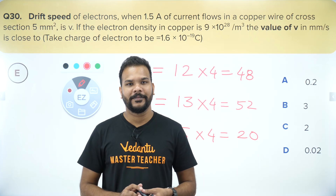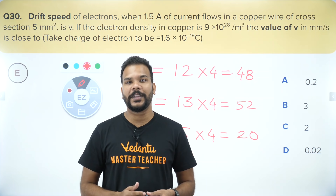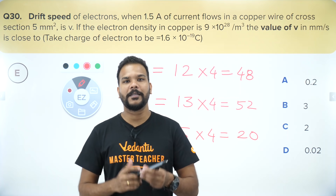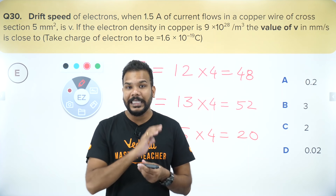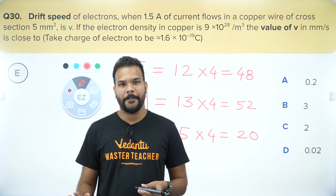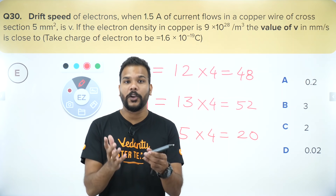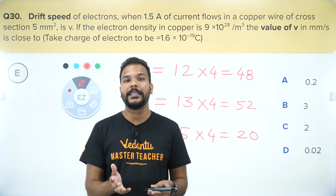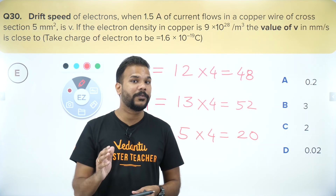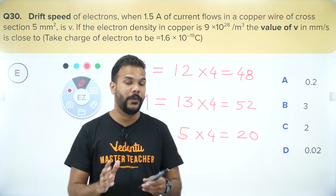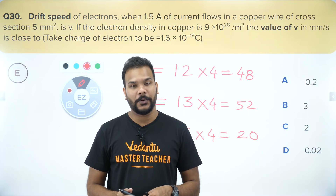Just imagine — your total score would be around 250. With a score of 250, imagine what rank you can easily get, securing at least your NITs and some of the IITs as well.